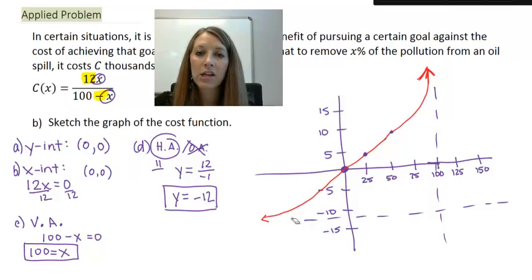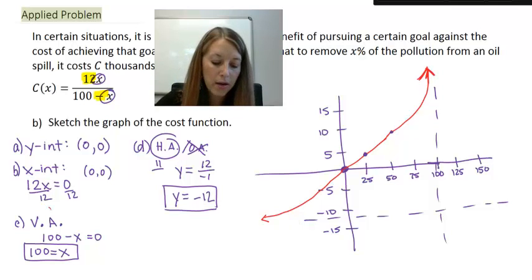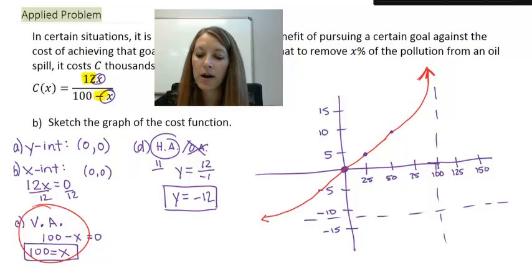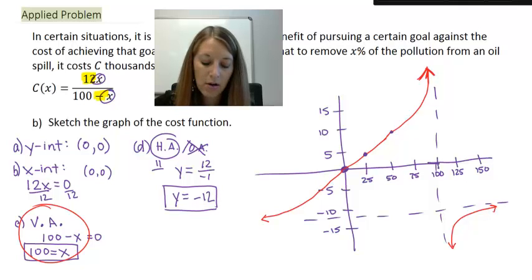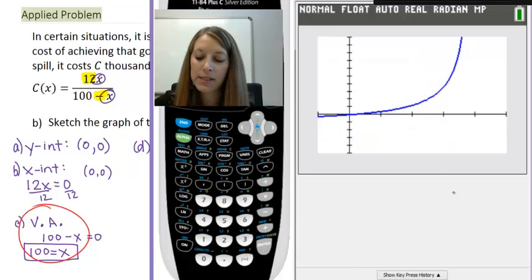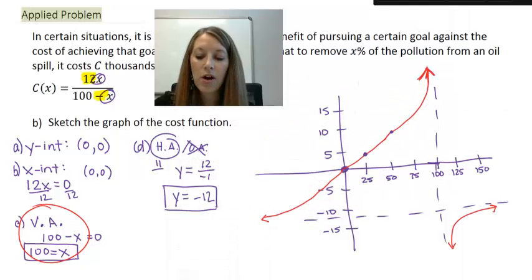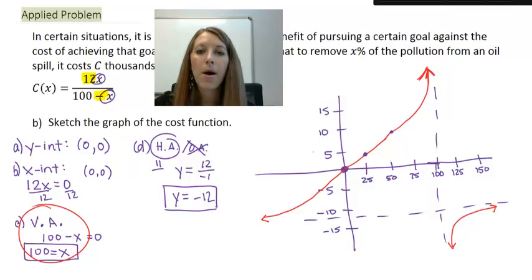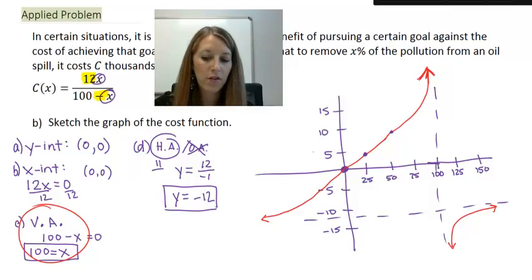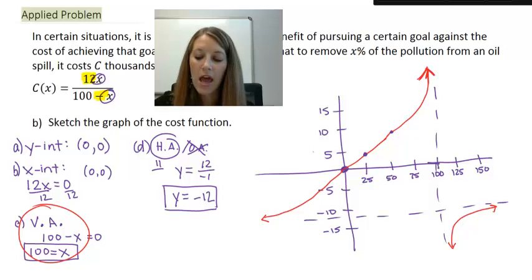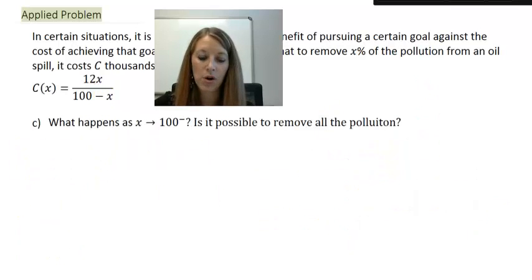Now we really see the vertical asymptote at 100, so I can fill in the rest of the graph. The graph follows the horizontal asymptote at negative 12, curves around, hits these points, then curves up following the vertical asymptote. There is also a second part to this graph — with one vertical asymptote there are two parts — which appears down below, but we didn't graph it initially because it doesn't apply in this problem. One vertical asymptote gives us two parts to the graph.